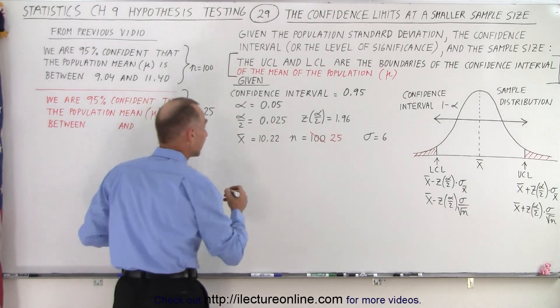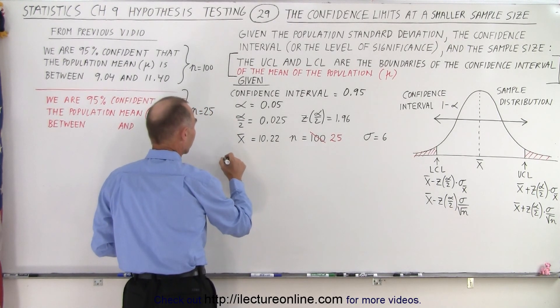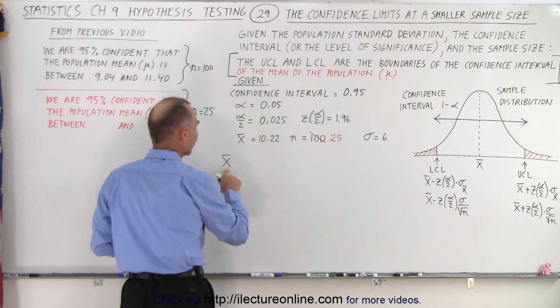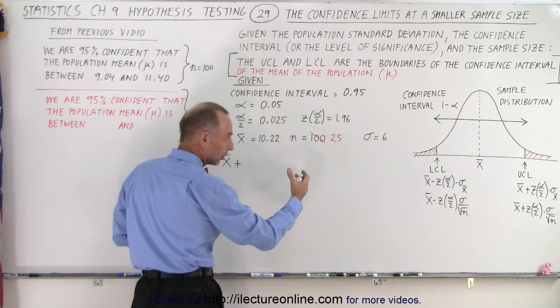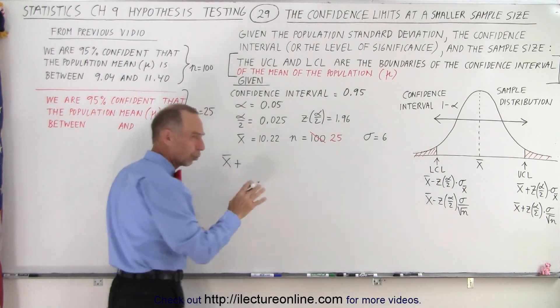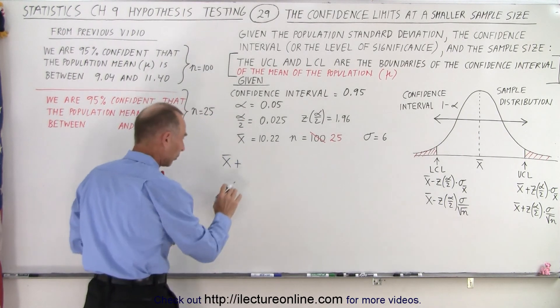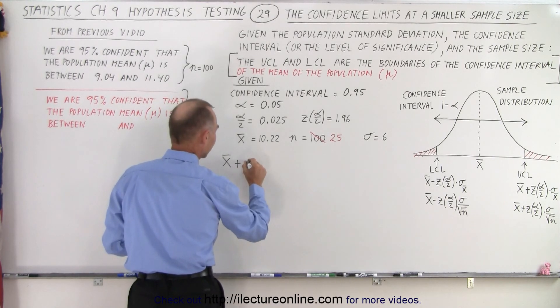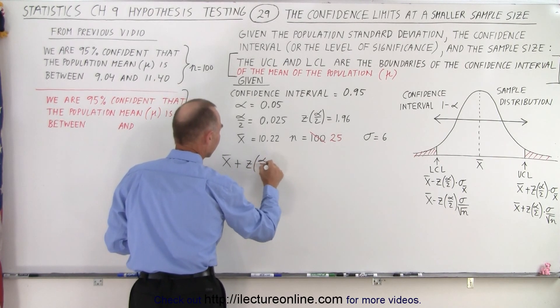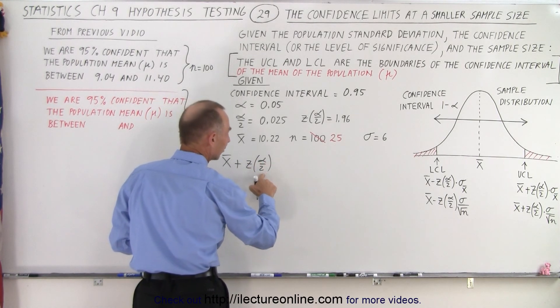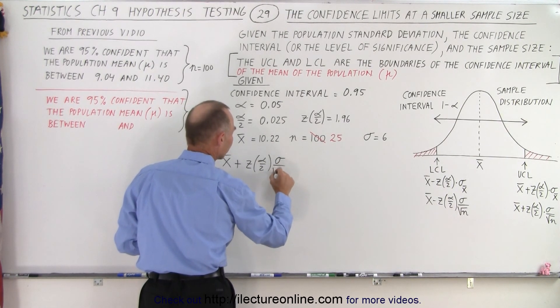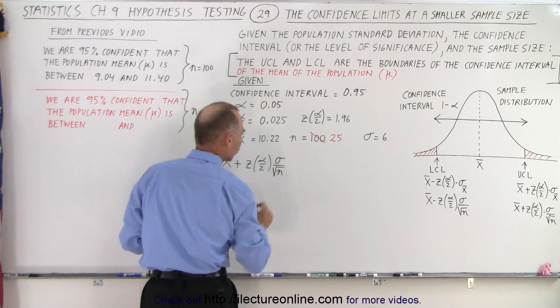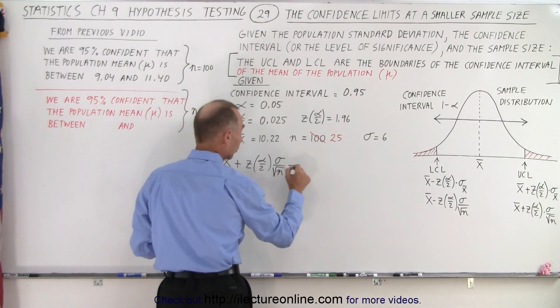We're going to calculate the upper confidence limit. So we're going to take the mean of the sample and add to that the maximum error. We take the z-score at the half level of significance and multiply it times the standard deviation of the population divided by the square root of the sample size, which is now going to be smaller.